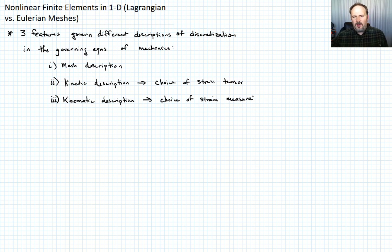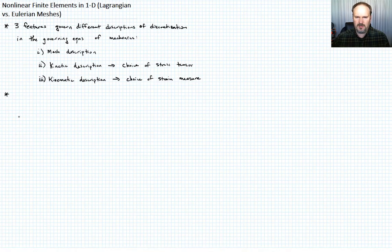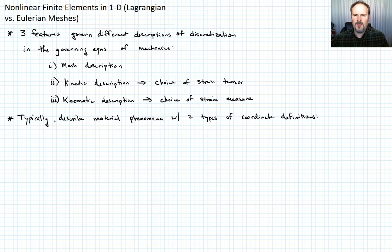So before we launch into meshes proper, I want to say that we typically describe material phenomena with two coordinate definitions. The first coordinate definition is what we'll call spatial coordinates, and we're going to denote those with a xi, right, the Greek letter xi, and these will sometimes also be called Eulerian coordinates.